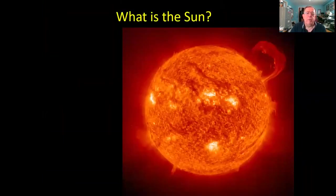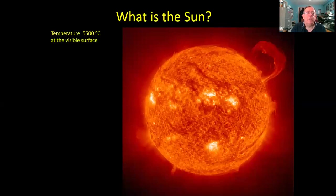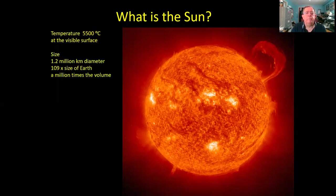What is the sun? People talk about it as a giant ball of gas, with a temperature of five and a half thousand degrees centigrade—that's the temperature at the visible surface, as shown in this photograph. It's really rather large: 1.2 million kilometers in diameter, over a hundred times the size of the Earth, and in terms of volume you could fit a million Earths inside it.